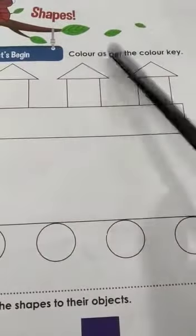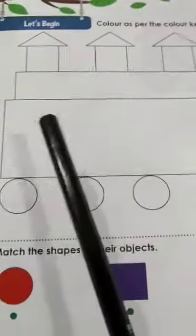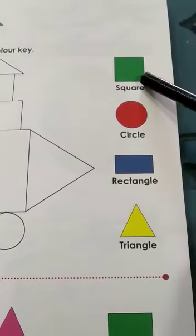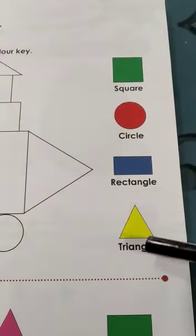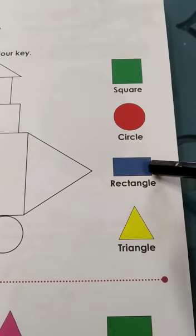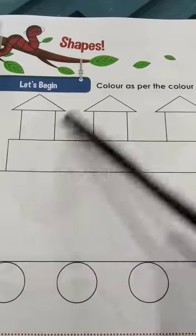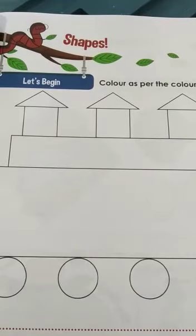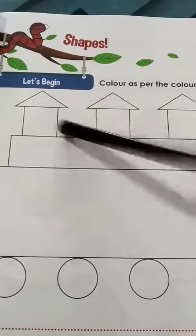What is written here? 'Color as per the color key.' Here you can see a picture of an engine, and at the side you have four shapes: square, circle, rectangle, and triangle. Square is green, circle is red, rectangle is blue, and triangle is yellow. So you have to look at the picture and find where you can see each shape. These three are squares — color them green. The four circles are the wheels of the engine — color them red.